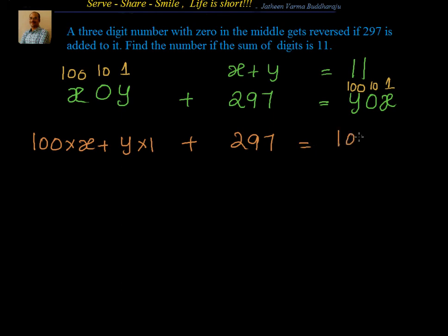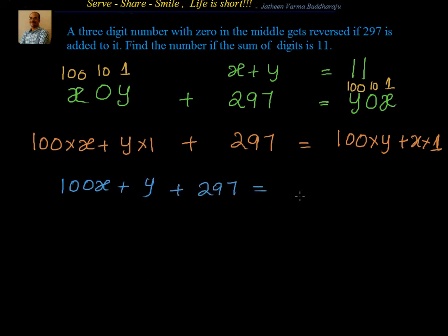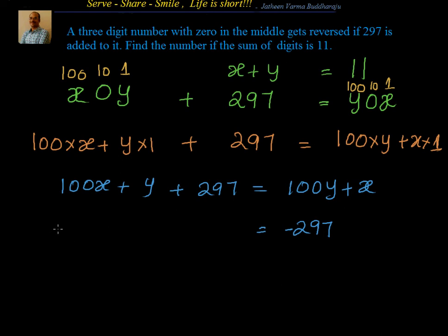...equals 100 times y, plus 0 times 10, plus x times 1. If I simplify this, I will have 100x plus y plus 297 equals 100y plus x. Let me get all the variables to the left-hand side and send the numbers to the right-hand side, subtracting 297.